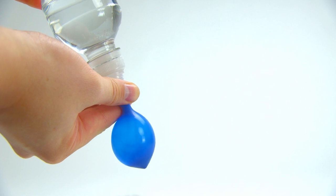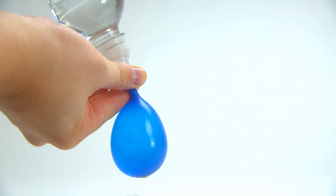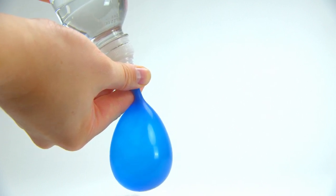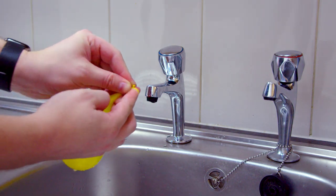If your tap is too wide, a great alternative is to use a water bottle. Fit the balloon over the nozzle and fill with water. Then tie the balloon neck securely.